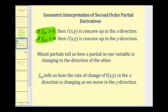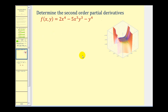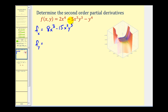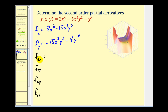Let's take a look at some examples to get some practice on finding second order partial derivatives. Before we do that, we have to find the first order partial derivatives. The first partial with respect to x, treating y as a constant, gives us 8x cubed minus 15x squared y cubed. The first partial with respect to y gives us negative 15x cubed y squared minus 4y cubed. Now let's find all four second order partial derivatives. For f_xx, we differentiate again with respect to x to get 24x squared minus 30x y cubed.